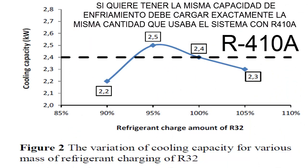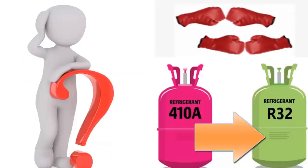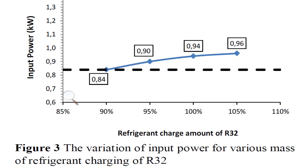5. Adding the same amount of R-32 as used with R-410A will maintain cooling capacity, but result in higher electrical consumption.